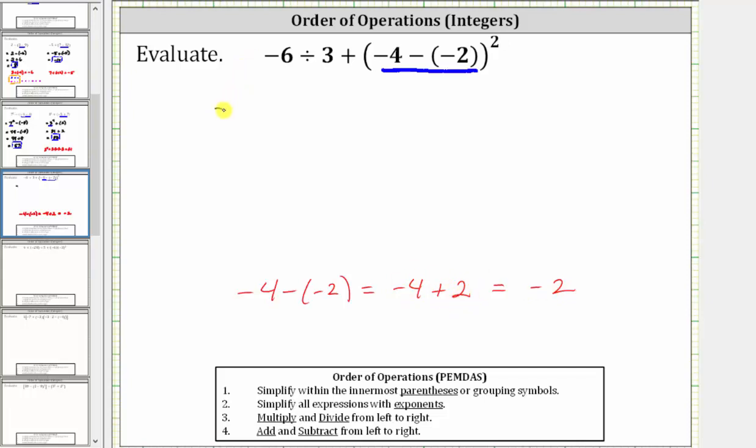This means the expression simplifies to negative six divided by three plus the square of negative two. The next step is to simplify the exponents, which means we need to evaluate the square of negative two.